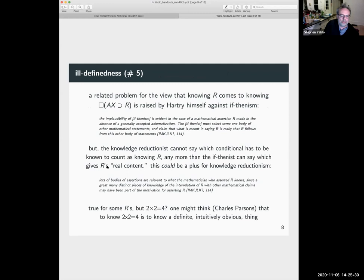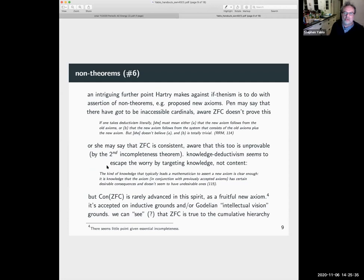Okay, an intriguing further point that Hartree makes against if-thenism is to do with assertions that we sometimes make of non-theorems, say a proposed new axioms. So Penelope Maddy may say that there have got to be inaccessible cardinals, aware that ZFC doesn't prove this. You know, inaccessible cardinals are, they pretty much have got to be.